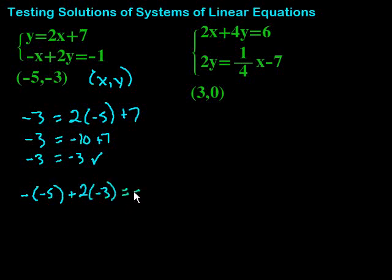Now, negative negative gives us a positive 5. So we have 5 and then 2 times negative 3 would be minus 6 equals negative 1. Almost there. 5 minus 6 is negative 1. Negative 1 equals negative 1. That is also true. So, that means that negative 5, negative 3 is a solution to this system.